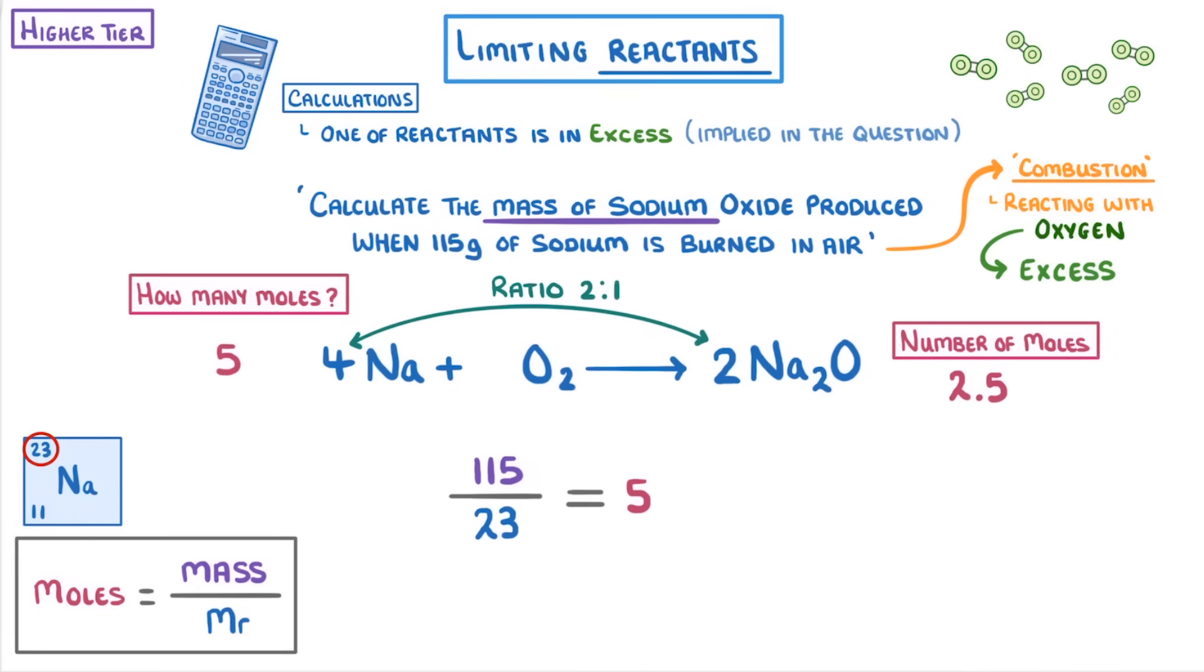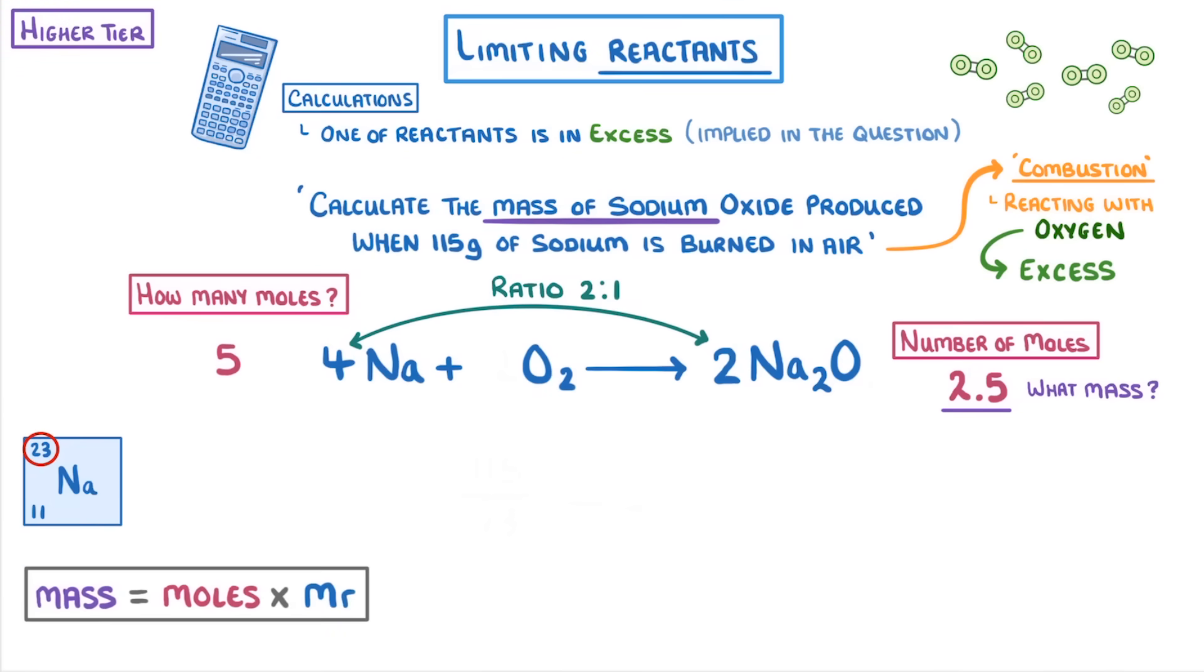So now we need to find what the mass of 2.5 moles of sodium oxide is. To do this, we're going to have to take our equation and rearrange it to get mass equals moles times MR. We already know the number of moles is 2.5, so we just need to get the MR of sodium oxide, which we get by taking 2 times 23, because there are two sodiums in Na2O, and adding 16 for the oxygen, giving us 62.